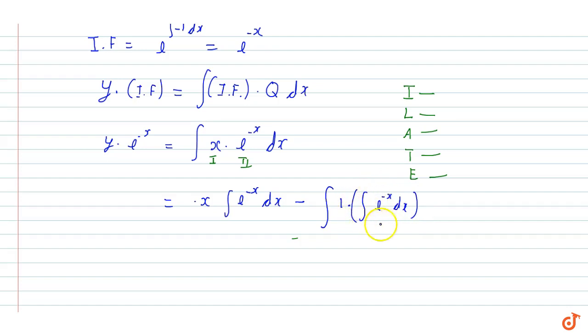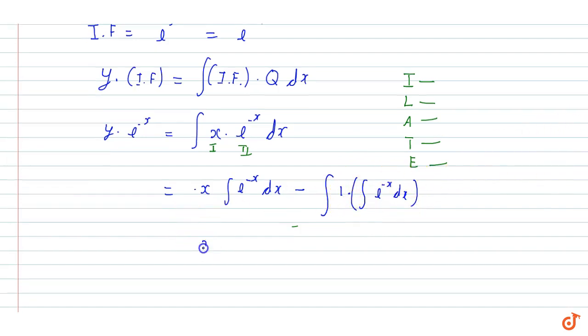So now this is equal to x times e to the power minus x upon minus 1, minus integration of e to the power minus x upon minus 1 dx.